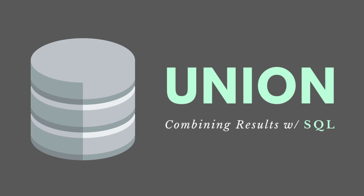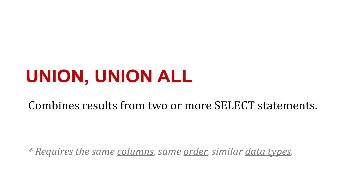We can use the UNION or UNION ALL operator in SQL to combine results from two or more SELECT statements. What's important is that when we combine these results, they have to have the same number of columns in the same order and with similar data types.